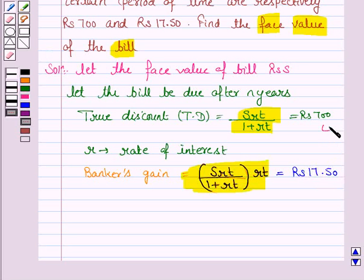Let's name this as equation 1 and this as equation 2. So we have S into R into T upon 1 plus R into T is 700. So from equations 1 and 2, we have 700 into R into T is equal to 17.50.